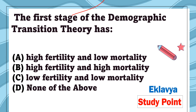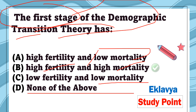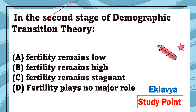Question 13: The first stage of the demographic transition theory is characterized by — high fertility and low mortality, high fertility and high mortality, low fertility and low mortality, or none of the above. The correct answer is high fertility and high mortality, because in the first stage countries are less developed and there is a lack of health services and facilities.